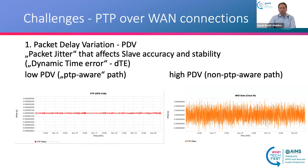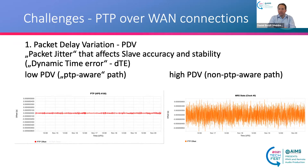PDV is sometimes also called the dynamic time error because it can change over time. Here you can see two examples with approximately the same scaling on the y-axis. Transporting PTP over a PTP-aware path or a direct connection results in plus or minus 50 nanoseconds from master to slave, whereas a non-PTP-aware path can show distributed packet jitter in the range of plus or minus 500 nanoseconds, and of course it can be much worse.